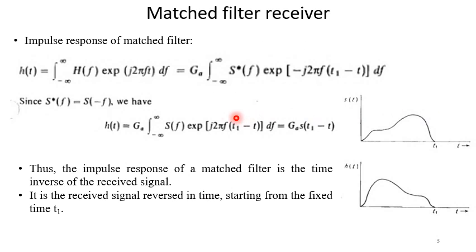Impulse response of the matched filter h(t) equal to integration H(f) exponential j2πft df. That is G_A integration S*(f) exponential minus j2πf(t_1 - t) df.